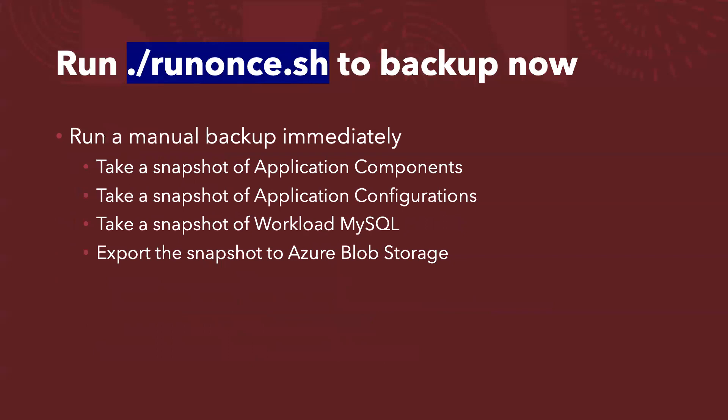You can also optionally, if you want to just run a manual backup, run the command runonce.sh to manually kick off a job immediately. It does the same thing — take a snapshot of the application components, take a snapshot of the application configurations, and then take a snapshot of the MySQL database running on persistent volume claims. After that, the snapshot is exported to Azure Blob Storage.